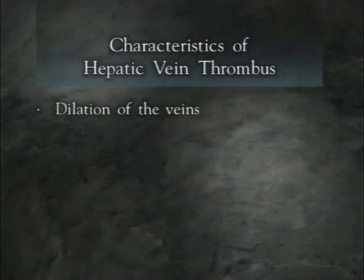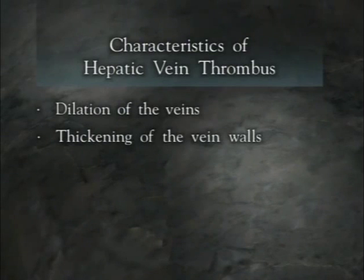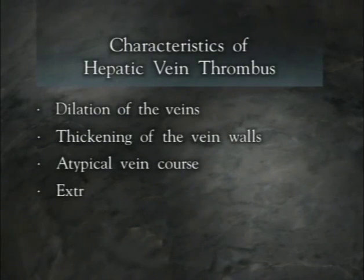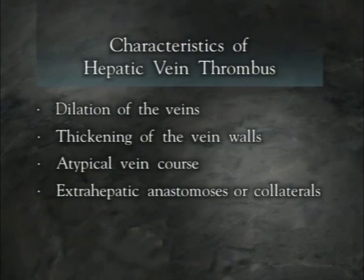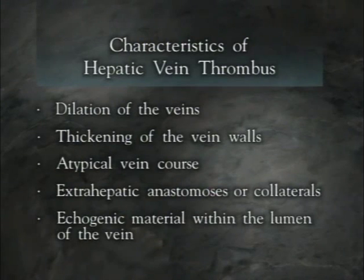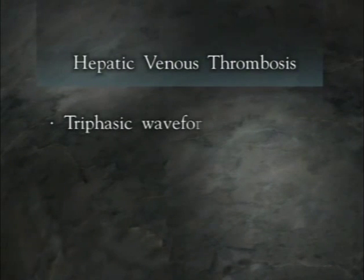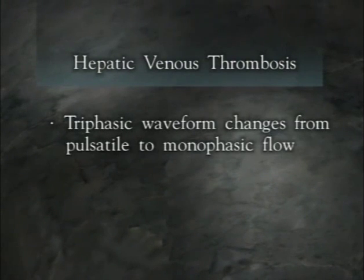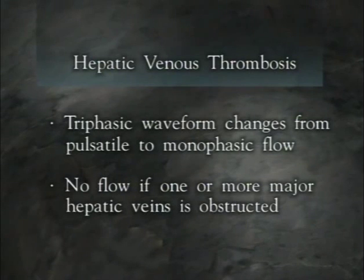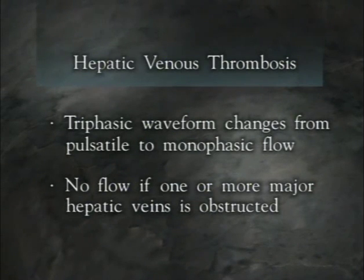If the hepatic veins are thrombosed, several diagnostic features may be present: dilation of the veins, thickening of the vein walls, atypical vein course, extrahepatic anastomosis or collaterals, and echogenic material within the lumen of the vein. In cases of hepatic venous thrombosis, the characteristic triphasic waveform will change from pulsatile to monophasic flow. There may be no flow if one or more of the major hepatic veins is obstructed. Because the hepatic veins have such a characteristic waveform, it is easy to recognize major flow changes in these vessels.